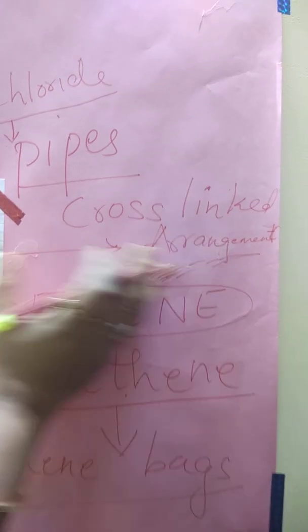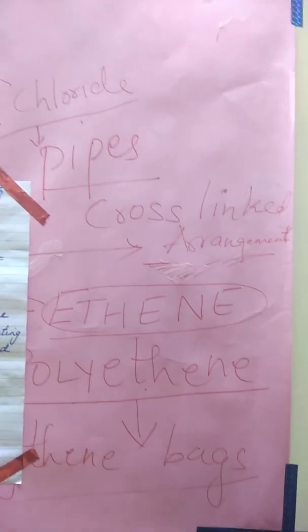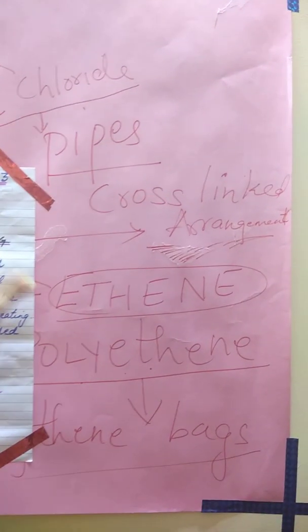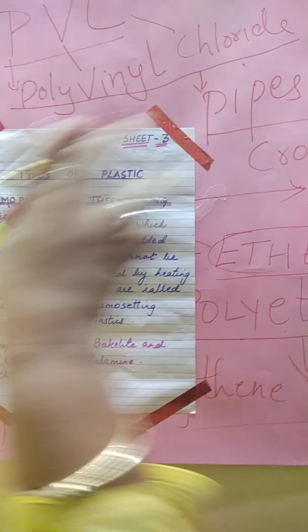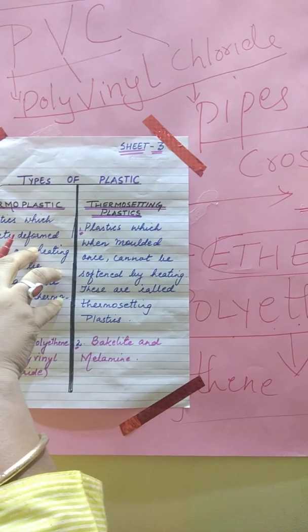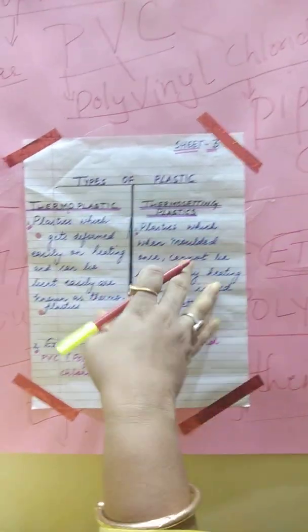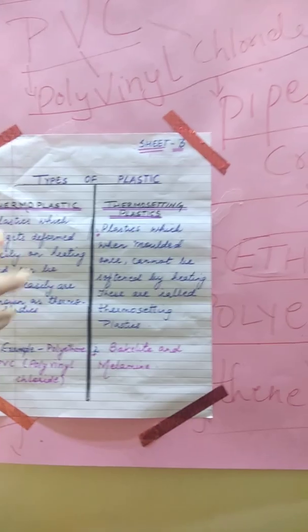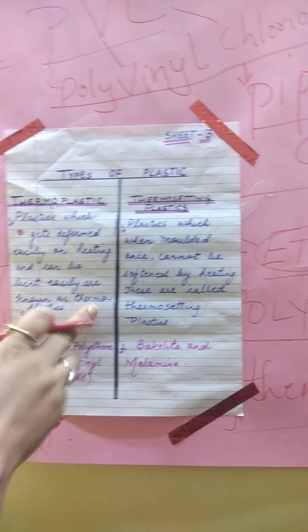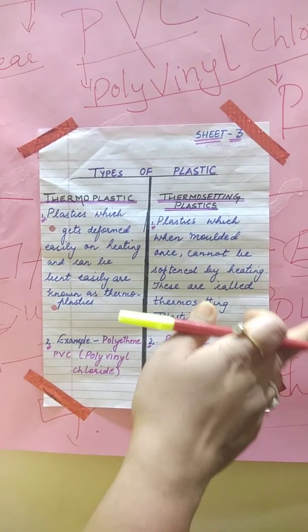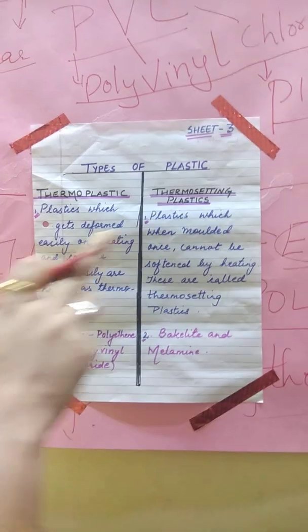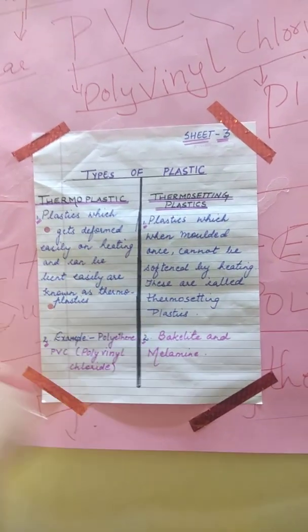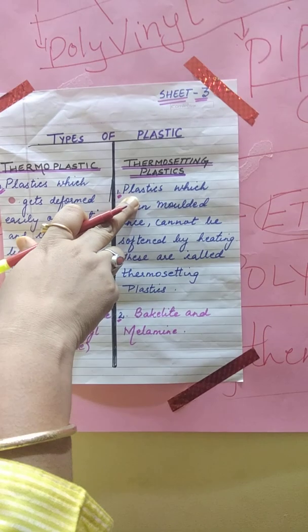So if you know one type of plastic, children, you can easily explain the second one. Thermoplastic: easily deformed. Thermosetting: cannot be easily deformed. Type of arrangement for thermoplastic: linear. Type of arrangement for thermosetting: cross-linked. Examples of thermoplastic: polythene, polyvinyl chloride, and more.